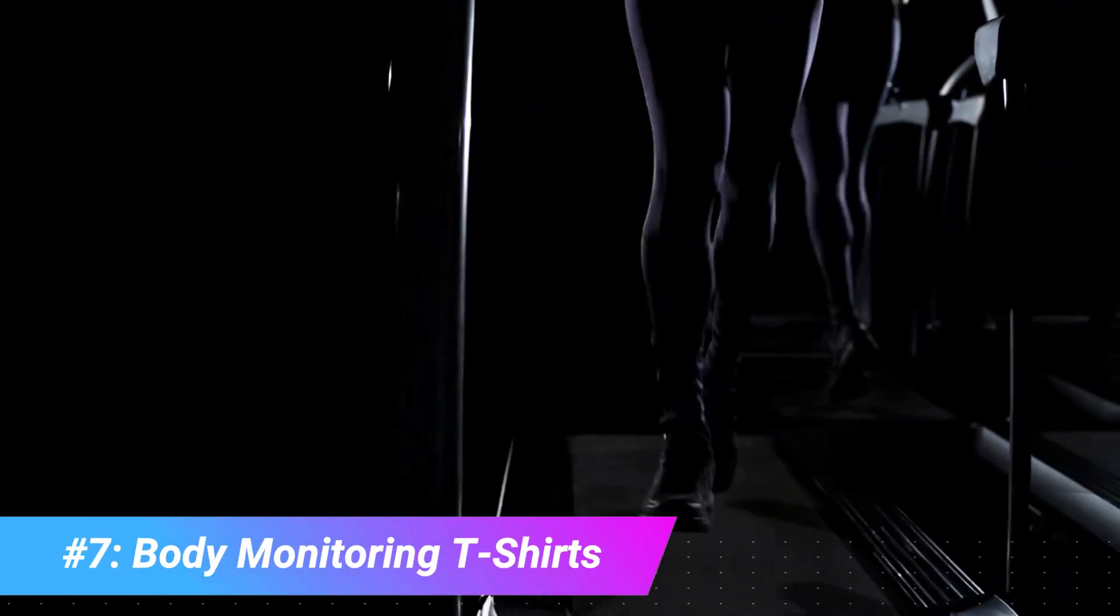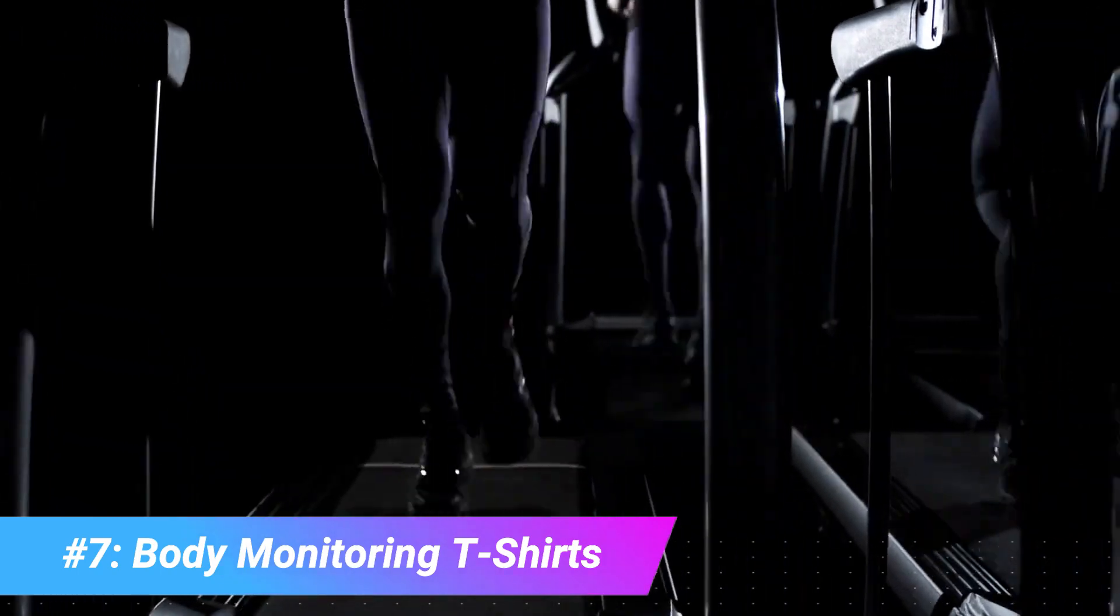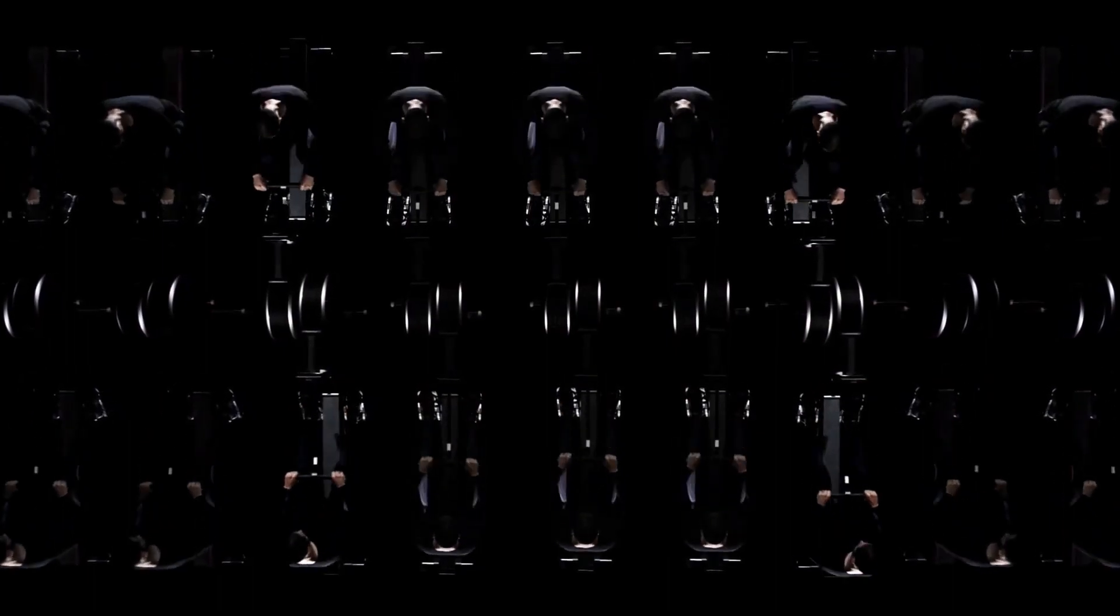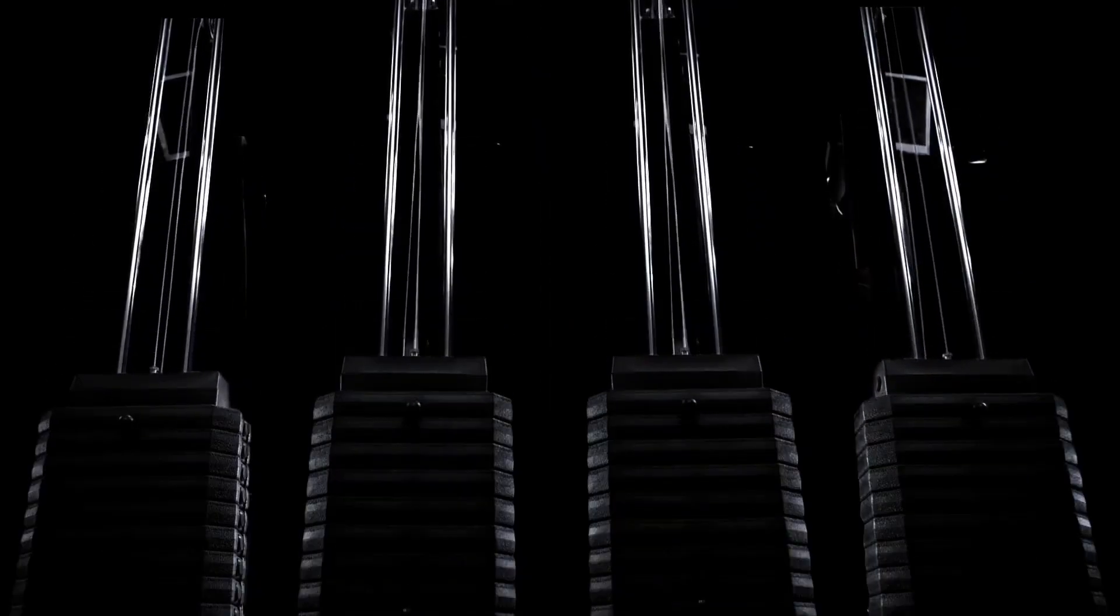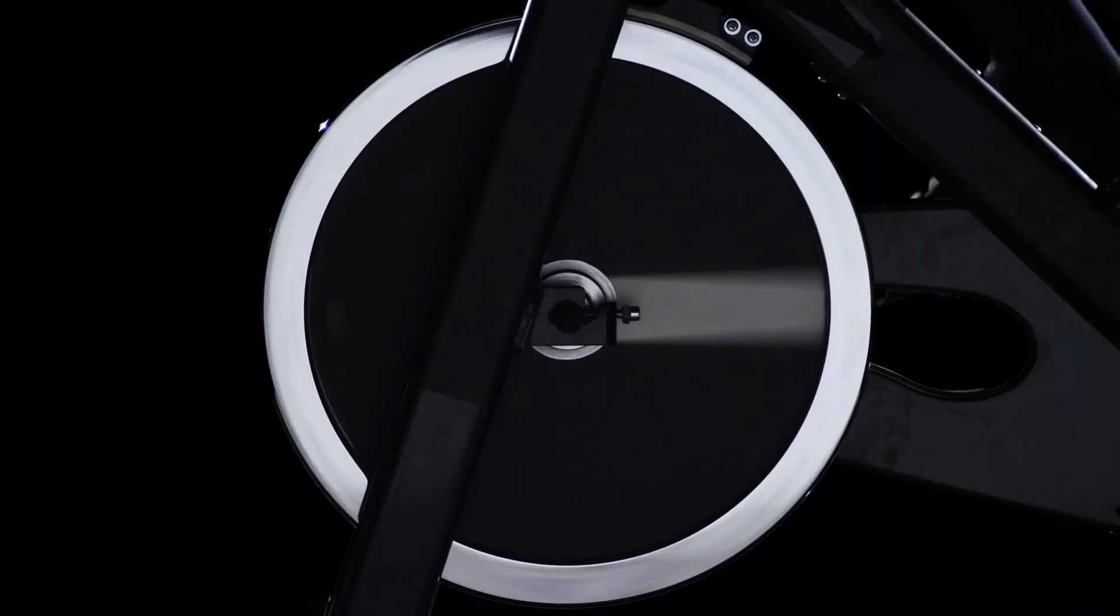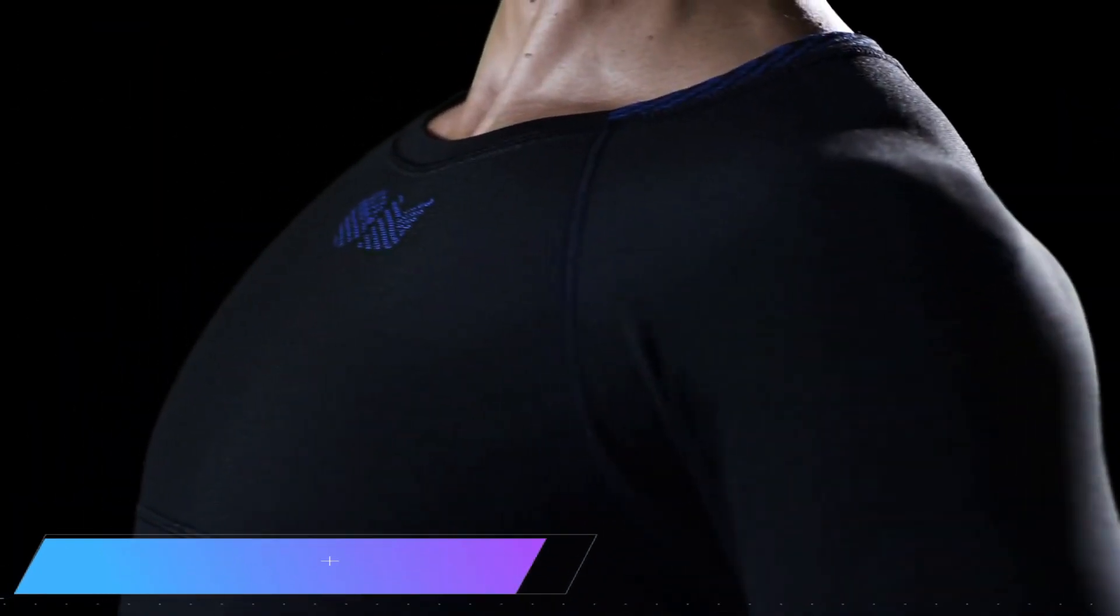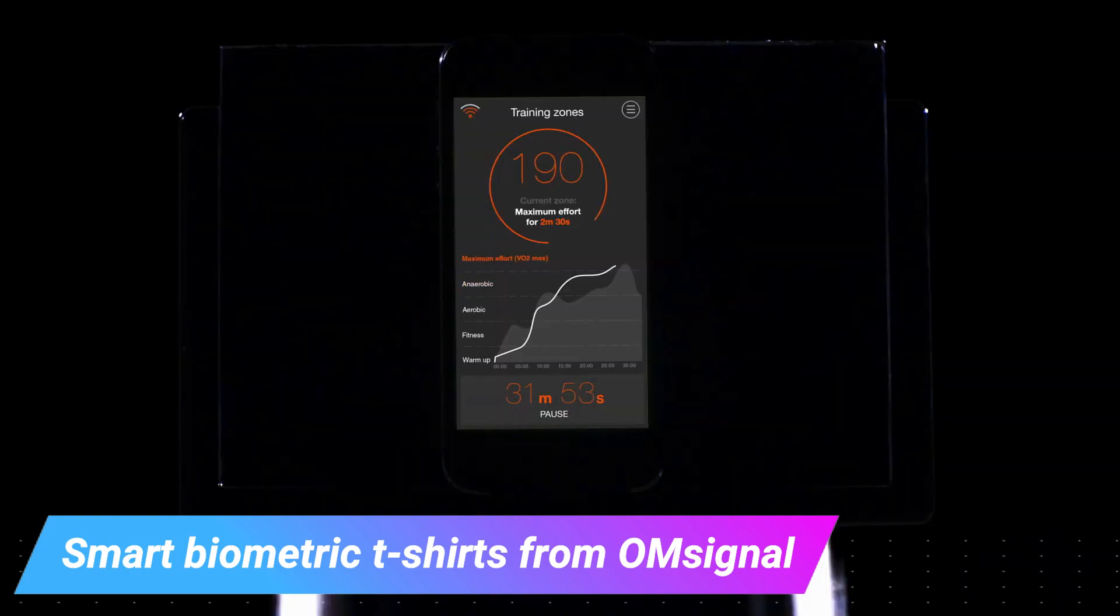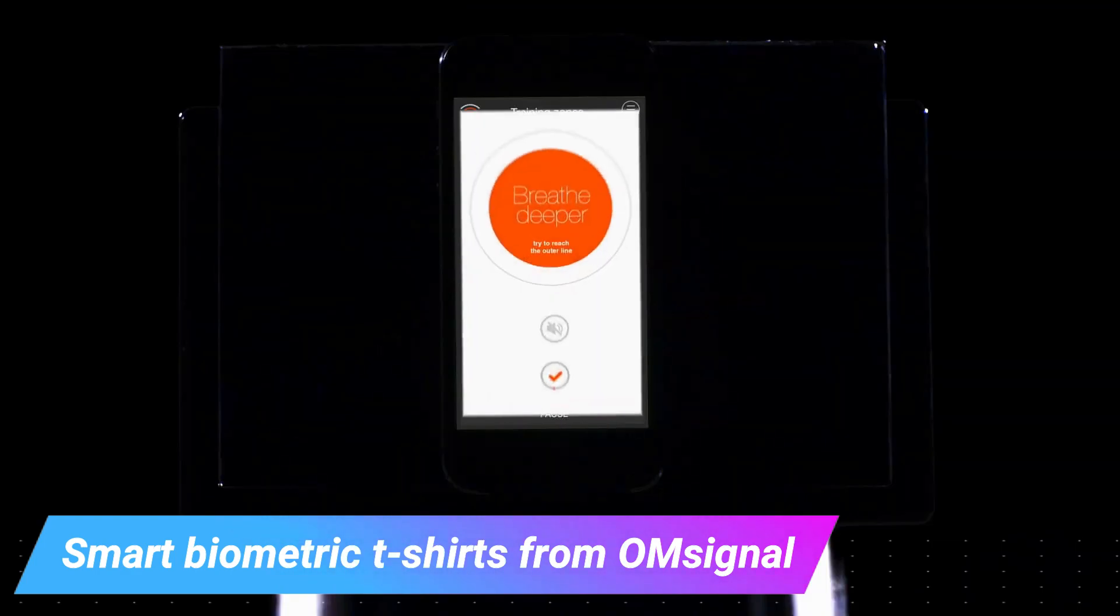Lastly, number seven: body monitoring t-shirts. Wearable sports bands that measure your heart rate are nothing new, but as numerous studies have shown, the accuracy can vary widely. In general, that's fine if you want an idea of how hard you're working out, but for professionals, accuracy is everything. Using a single lead ECG printed into the fabric, smart t-shirts are developed to accurately measure your heartbeats and upload them to the cloud via Bluetooth.